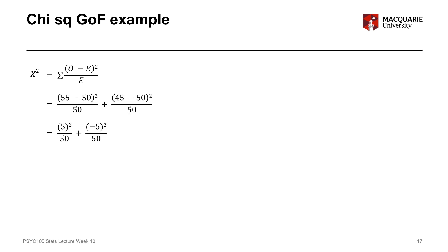For our chi-square goodness of fit example, using the formula, we plug in numbers for each category. For the true category: observed frequency 55 minus expected frequency 50, squared, divided by 50. For the false category: observed frequency 45 minus expected frequency 50, divided by 50. That gives us 5 squared over 50, plus negative 5 squared over 50, which becomes 25/50 plus 25/50, which equals 1.